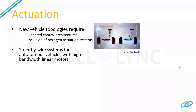One such system is steer-by-wire. In a conventional vehicle there is a mechanical linkage from the steering wheel all the way to the wheels — a gear translates the rotational motion into linear motion. In an autonomous vehicle, this mechanical linkage can be removed entirely and replaced with electric motors residing on the axle to perform the steering action, giving us a steer-by-wire system.